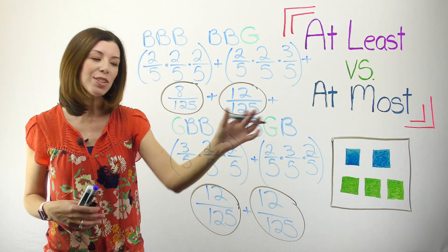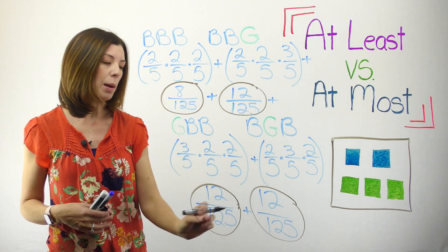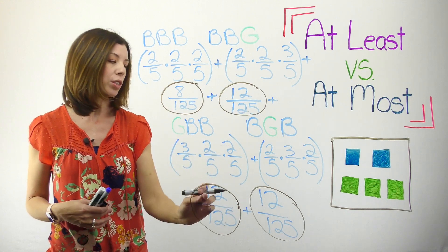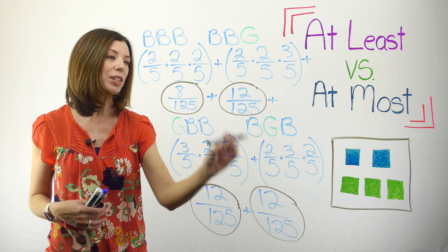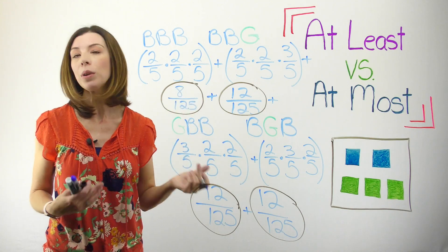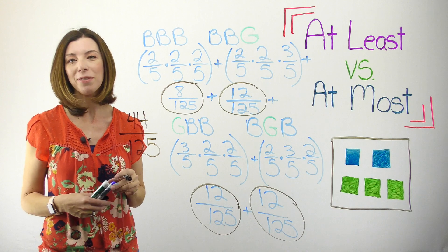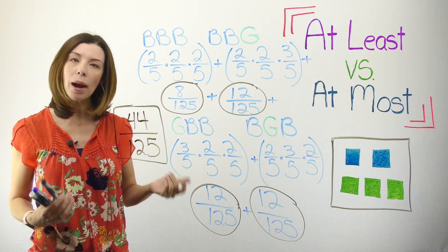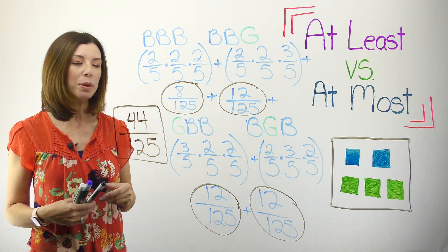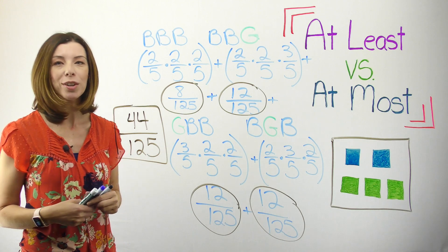When I add all of these probabilities together, they all have the same common denominator, so that's great. Three groups of twelve is 36, plus an additional eight gives me 44 one-hundred-twenty-fifths. My probability for getting at least two blue cubes is 44/125.